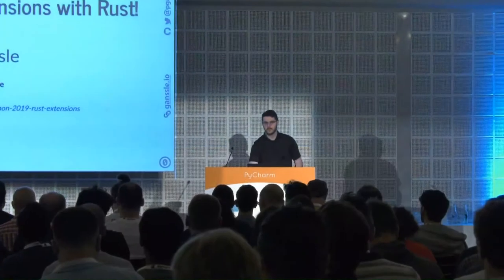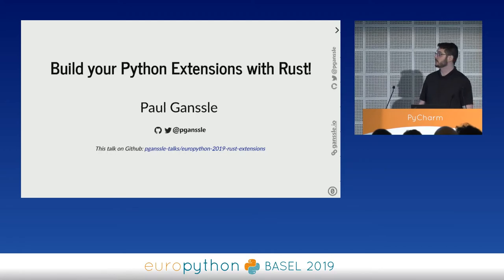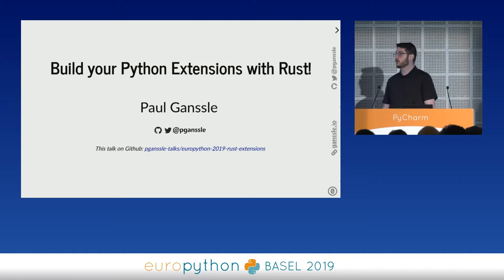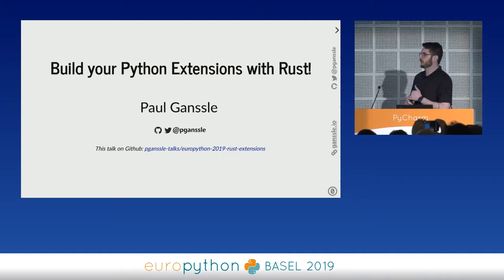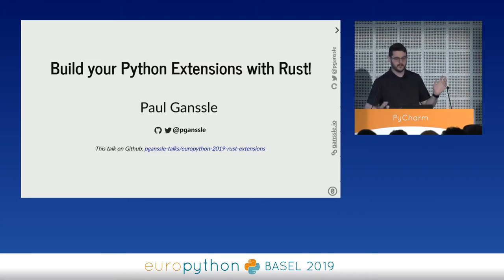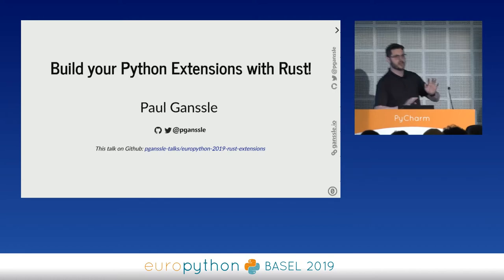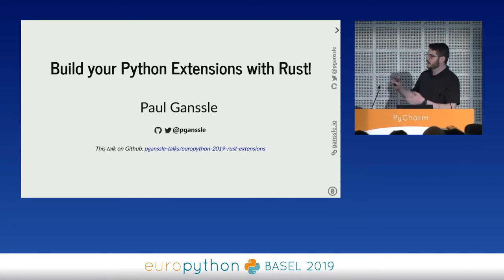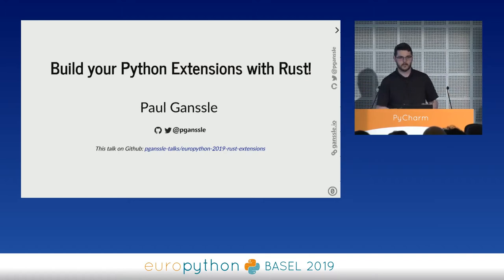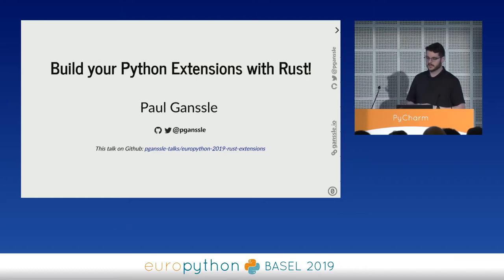Today I'm going to be talking about building Python extensions with Rust. This talk came about because I wanted to write a back end for dateutil and found that there were a bunch of different options available and I wasn't really sure which ones to choose. One caveat: you do not need to know any Rust. There are also a bunch of slides with code on them — just get the general feel of the code, you don't have to verify every line.